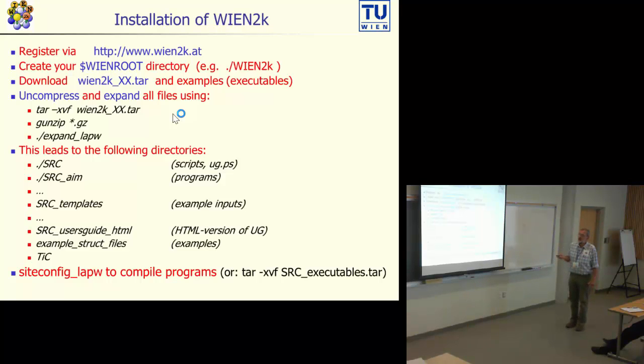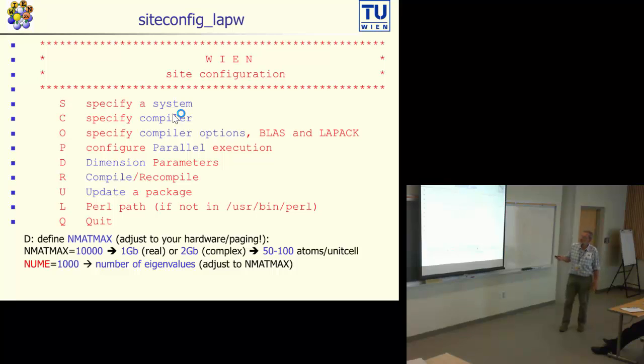The installation afterwards is done with a program called siteconfig_lapw. In siteconfig you specify a system, for instance an Intel PC with Linux. You specify a certain compiler like ifort. You specify compiler options, configure the parallel execution. You can redimension the program, compile it, and also update the program. For most of these things there are defaults.